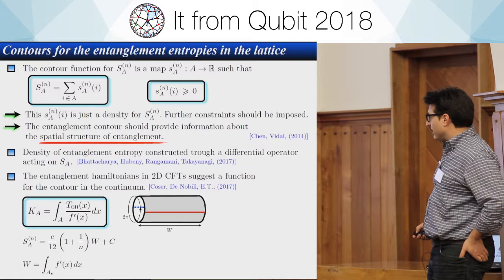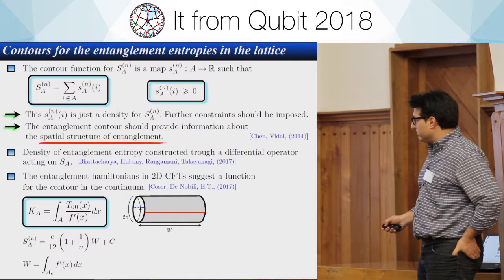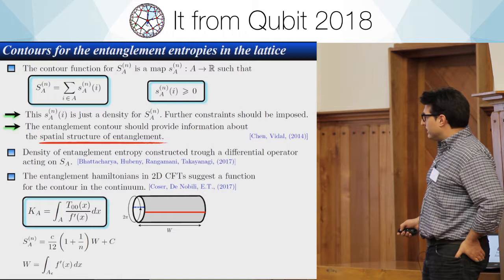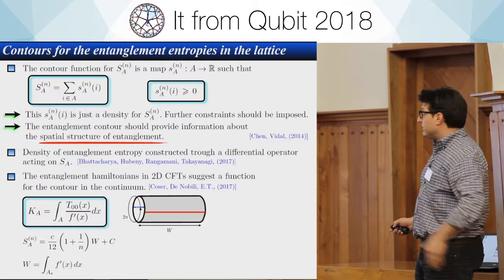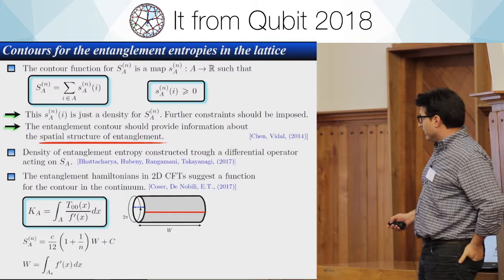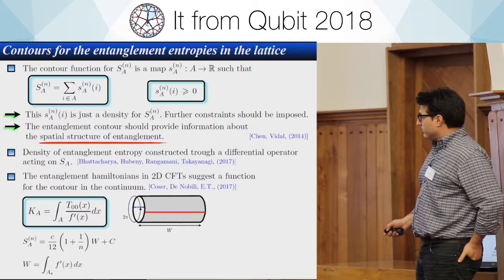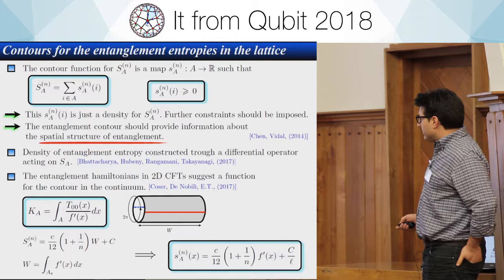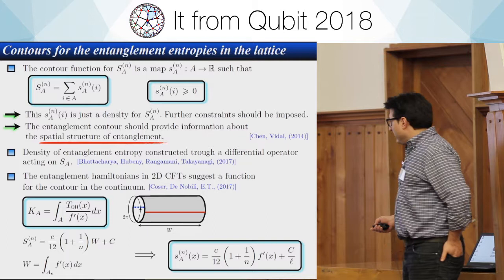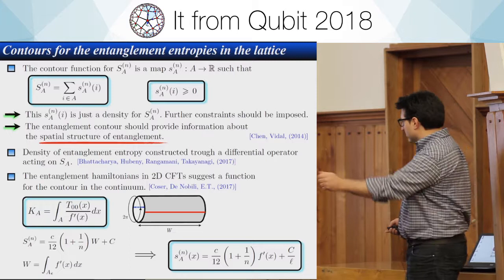Here I want to follow a different approach based on the construction I just described. If you take the Rényi entropies written in terms of W, and note that W is given by the integral over the interval of |f'|, where f is the conformal map to the annulus, then plugging this in immediately gives a CFT candidate for the contour function: it is proportional to the central charge times the derivative of the conformal map.